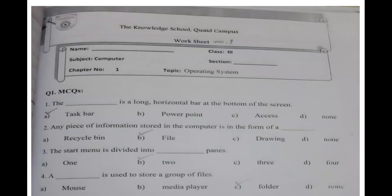Question number one is MCQs. Number one statement: the dash is a long horizontal bar at the bottom of the screen. As you know, students, the taskbar is a long horizontal bar at the bottom of the screen. The first answer is taskbar.